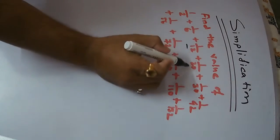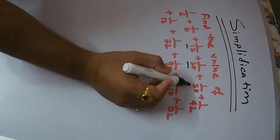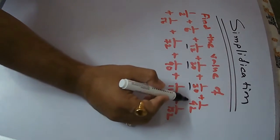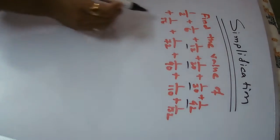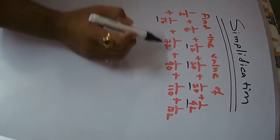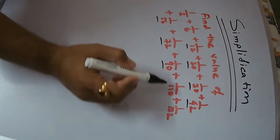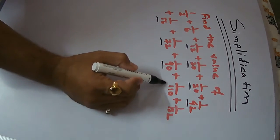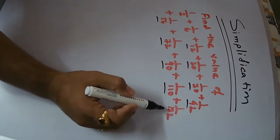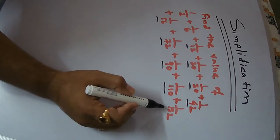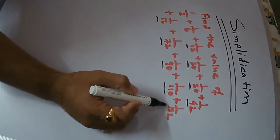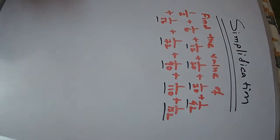plus 1 by 6, plus 1 by 12, plus 1 by 20, plus 1 by 30, plus 1 by 42, plus 1 by 56, plus 1 by 72, plus 1 by 90, plus 1 by 110, plus 1 by 132. We are going to find the value of this series.